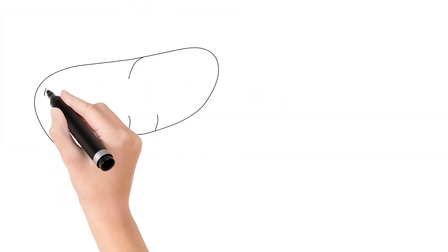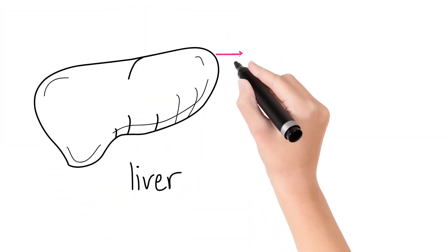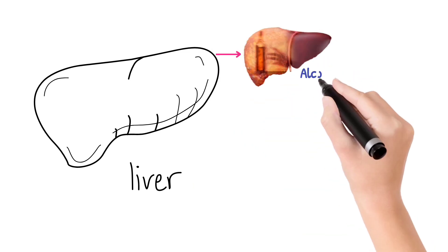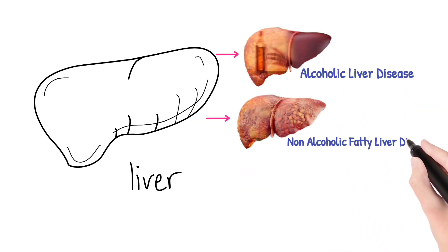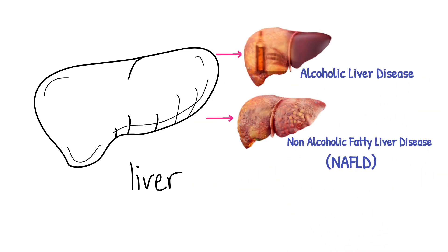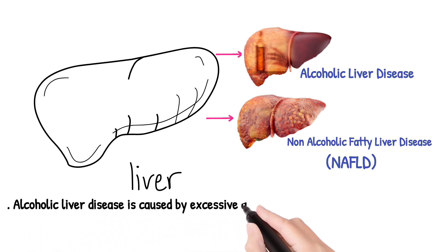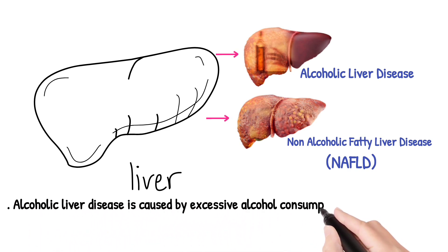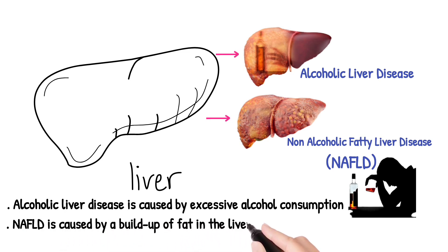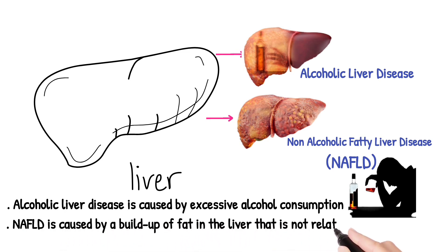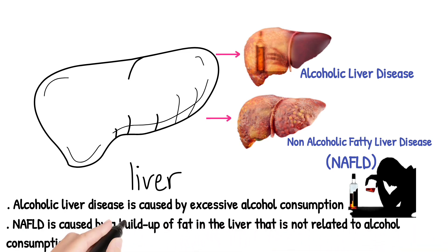There are two main types of fatty liver disease: alcoholic liver disease and non-alcoholic fatty liver disease (NAFLD). Alcoholic liver disease is caused by excessive alcohol consumption, while NAFLD is caused by a buildup of fat in the liver that is not related to alcohol consumption.